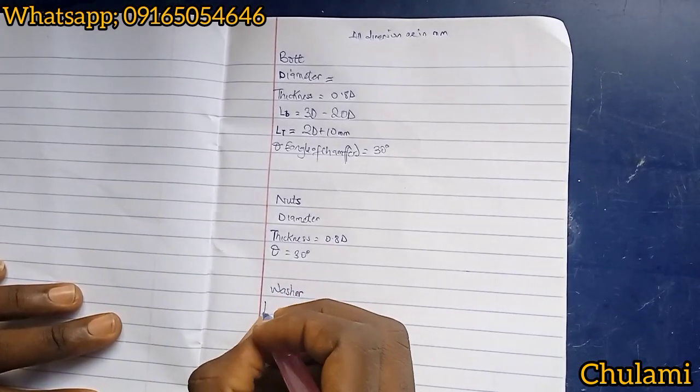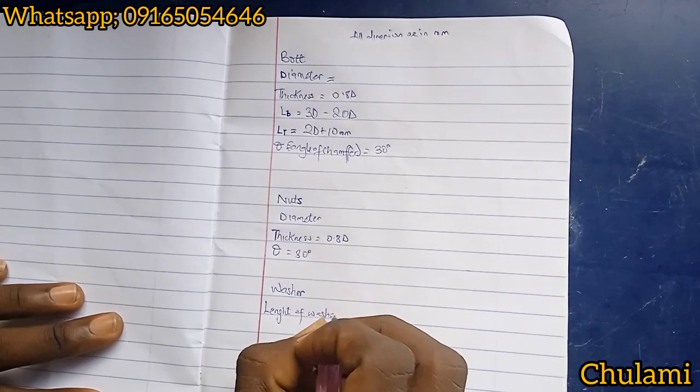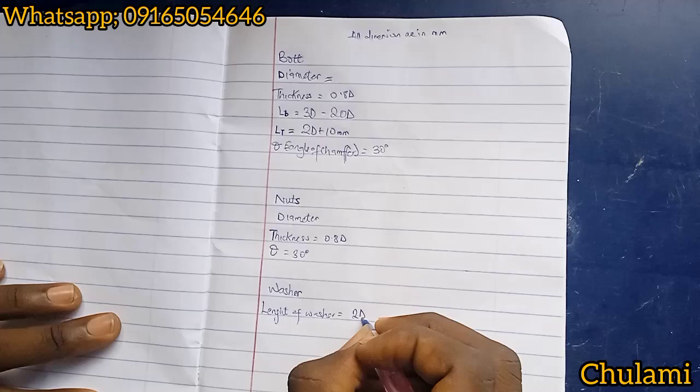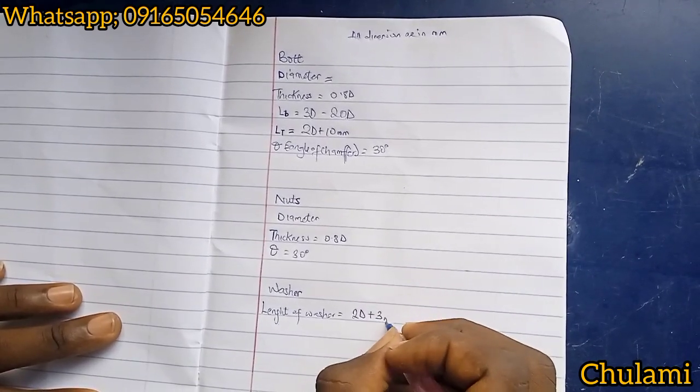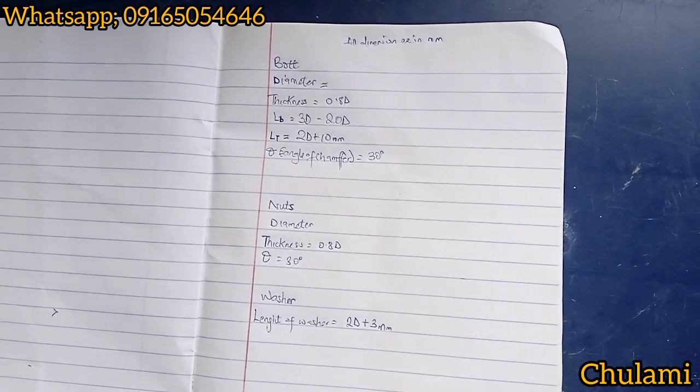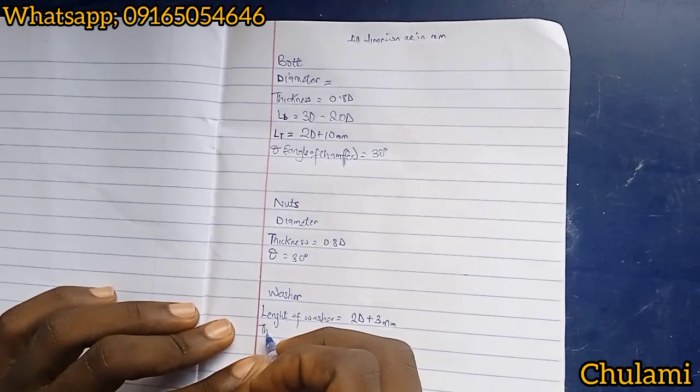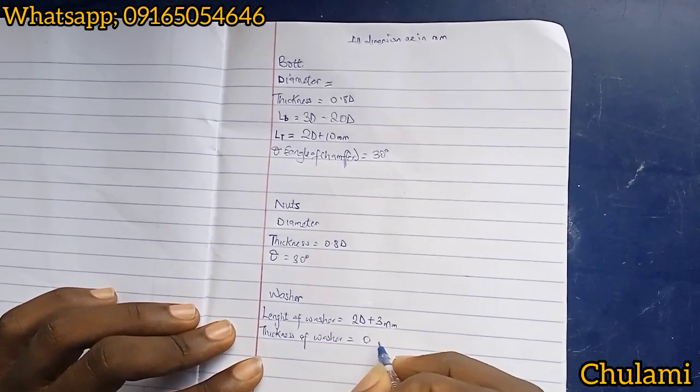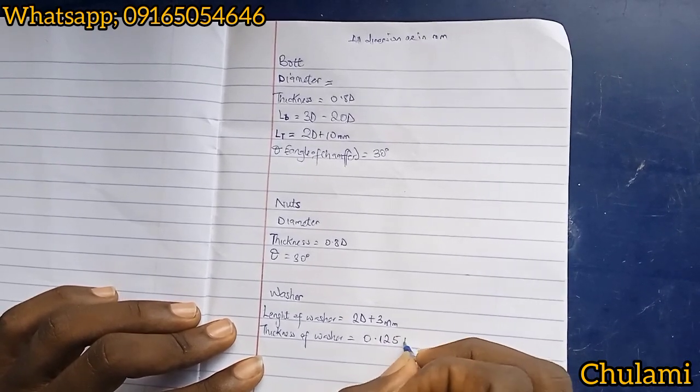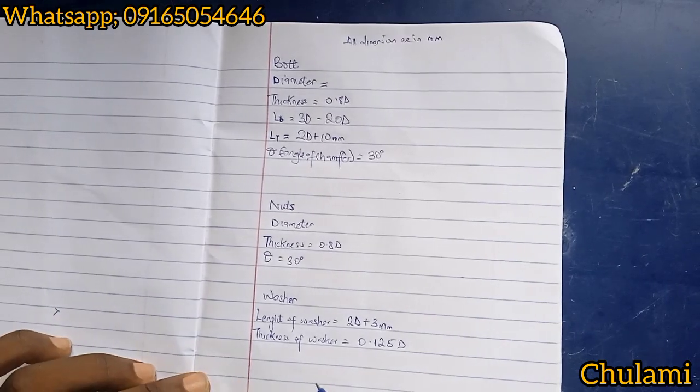Now for our washer, length of washer formula is equal to 2d plus 3 millimeter. Sometimes I would like to use 2d plus 4 to make it even, but all is the same thing. While our thickness of washer is equal to 0.125d. So this is all we need for our washer.